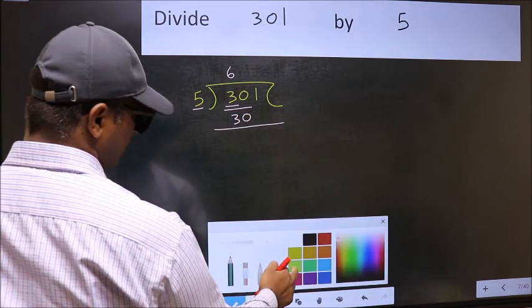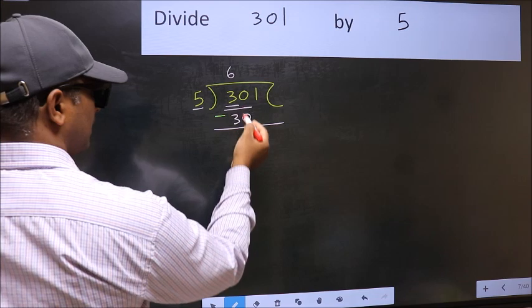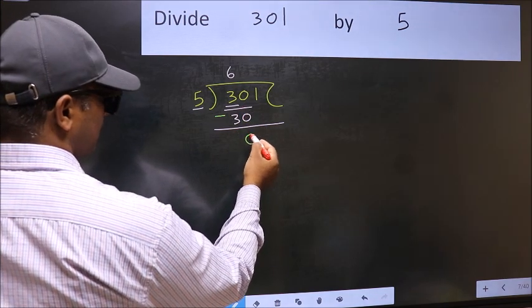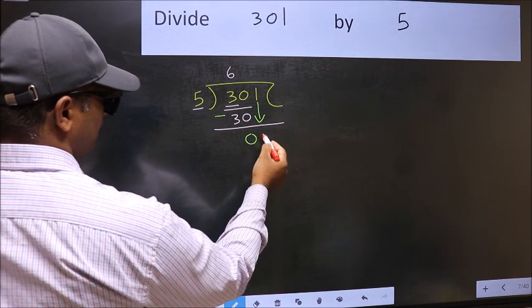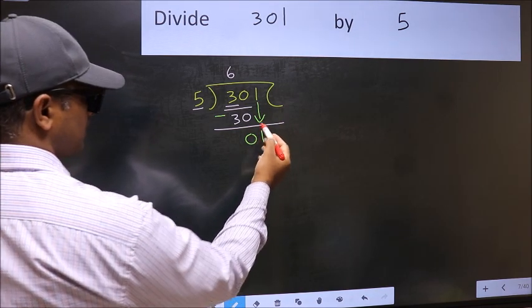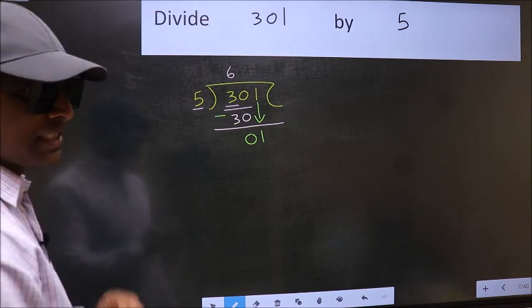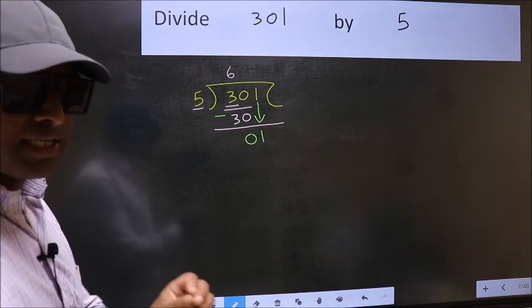Now we should subtract. 30 minus 30, 0. After this, bring down the beside number. So, 1 down. After this step, the mistake happens. And the mistake is this.